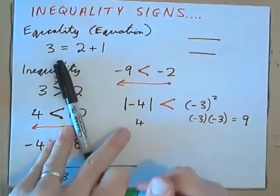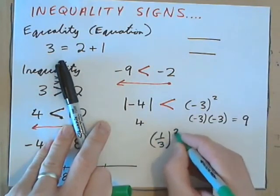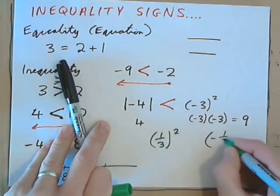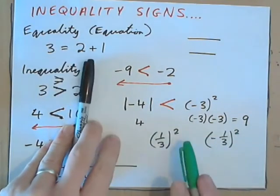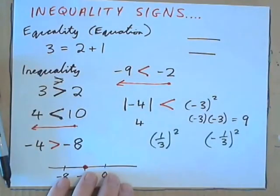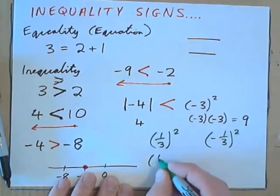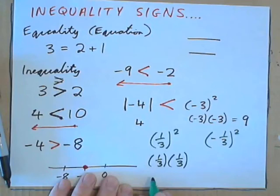Okay. What if we had 1 3rd in parentheses squared. And negative 1 3rd in parentheses squared. Now, how would you put your inequality sign? 1 3rd squared is 1 3rd multiplied by 1 3rd. When we multiply fractions, we multiply the tops. 1 times 1 is 1. Then, we multiply the bottoms. 3 times 3 is 9. Okay?